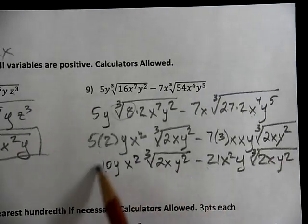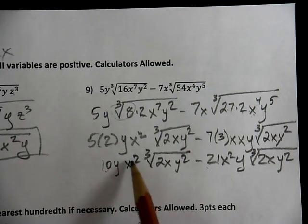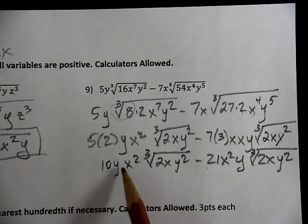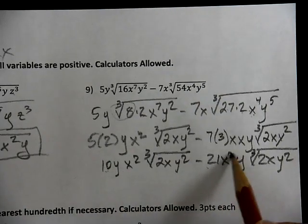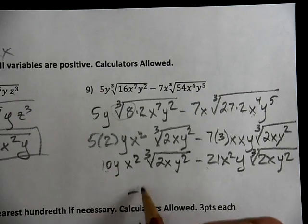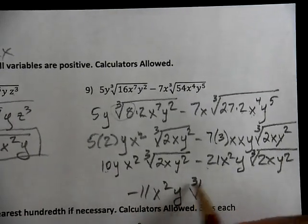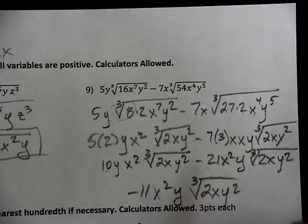Remember, both radicals have to be exactly the same. This is 10y x squared, cube root of 2xy squared, minus 21x squared times y, cube root of 2xy squared. Notice our like terms, the order doesn't matter in multiplication, so 10x squared times y, 21x squared times y, they're the same. So negative 11 x squared y, 2xy squared.